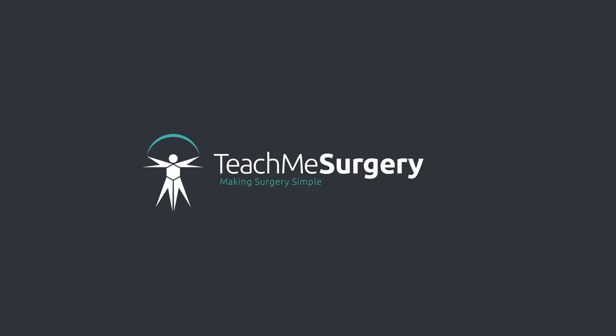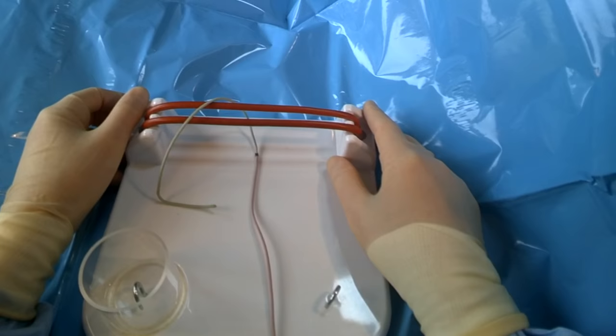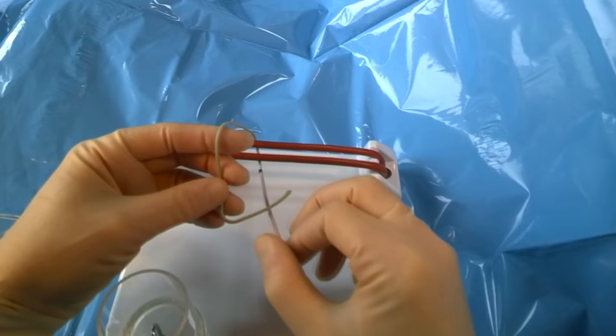In this video we're going to demonstrate how to do a one-handed knot tie. What we have here is our knot tying jig, our thread, and what you can see here is we've got a short thread and a long thread.